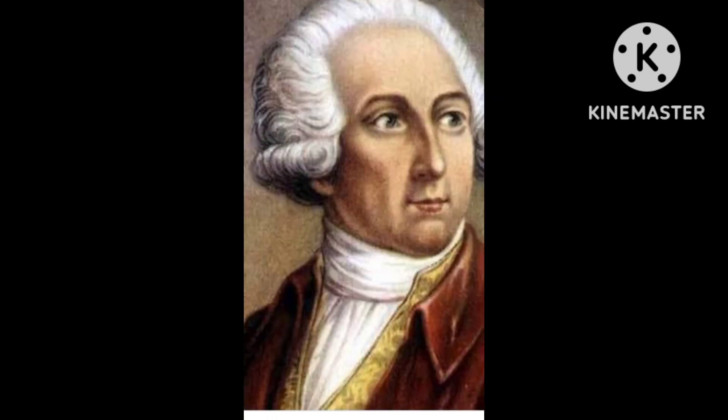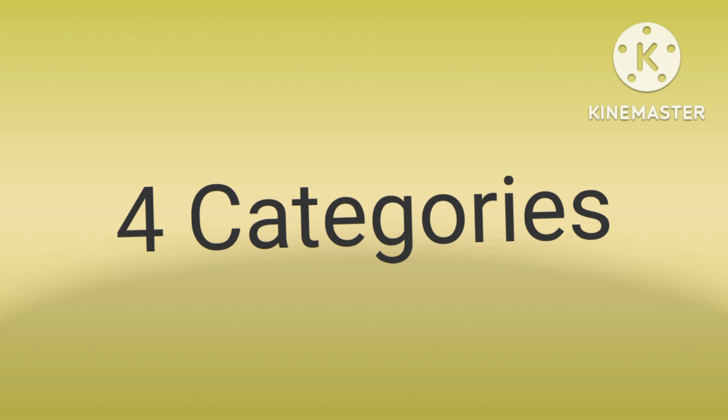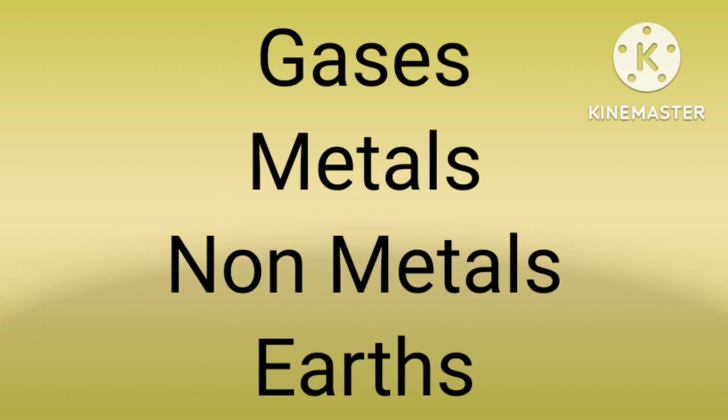After the 18th century, another scientist, Antoine Lavoisier, predicted 11 elements. He organized the elements of the periodic table based on the classification of their chemical properties. He classified them into four categories: basic elements, gases, metals, non-metals, and earths.